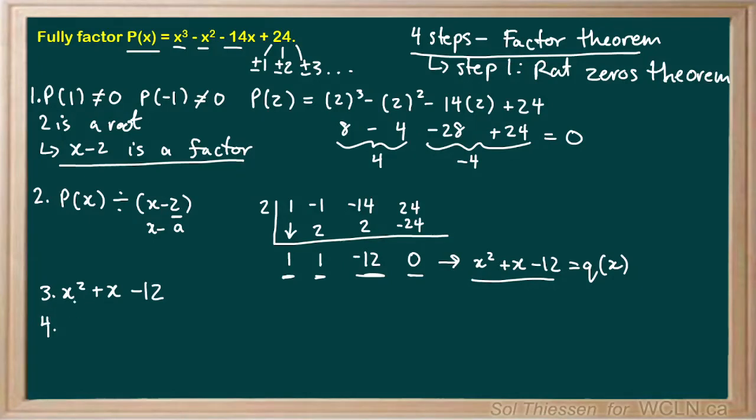And now, step 4 is to factor the quadratic. So we can factor this quadratic using the fast factoring method, since the leading coefficient is 1. So 1 times negative 12 gives us negative 12. So we're looking for two numbers that multiply to negative 12 and add to 1, which is the coefficient on the x term. So those two numbers are 4 and minus 3. So 4 minus 3 gives us the 1 on the x term, and 4 times negative 3 gives us the negative 12 constant term. So we can factor this quadratic down to x plus 4 times x minus 3.